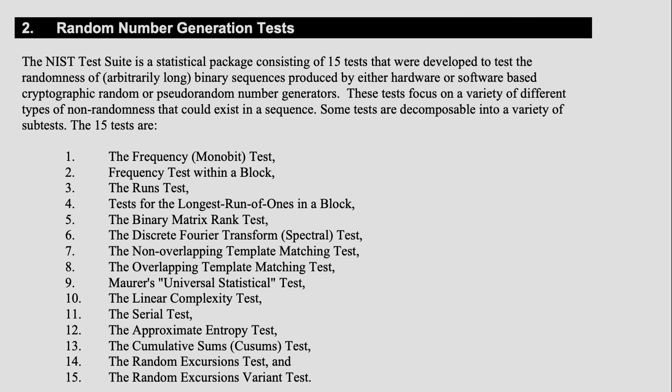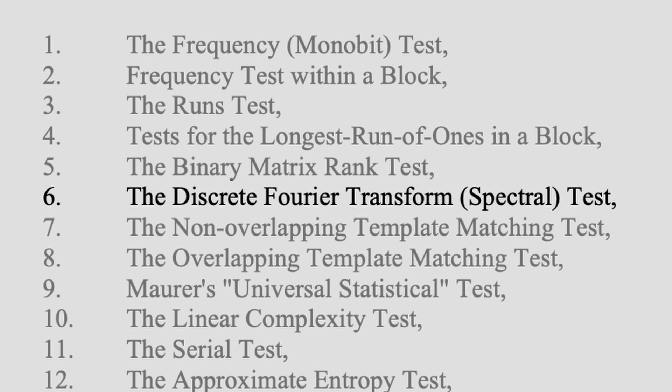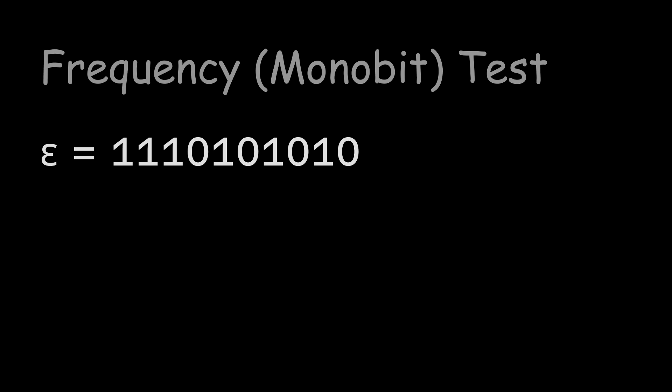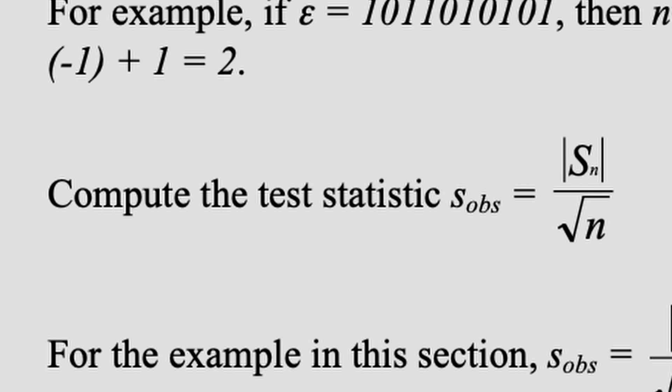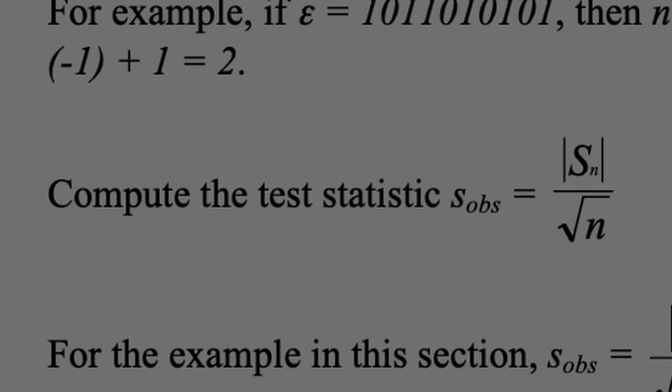I want to take you through this paper the way I experienced it 10 years ago, at least until the part where I gave up. The first test is the frequency test. The idea is that we treat each bit as either a positive one or a negative one. Then we add them up, and if the sequence looks random, the sum should equal zero. Then we compute the test statistic by taking the absolute value of the sum and divide it by the square root of N.